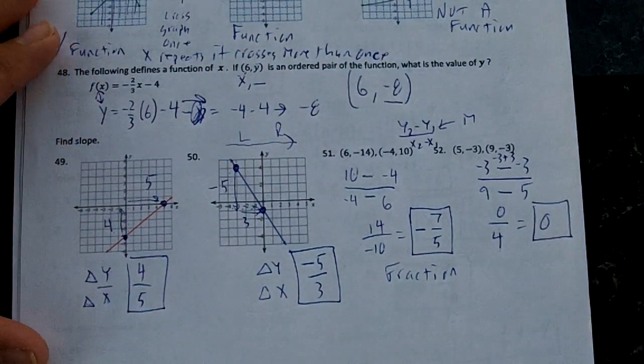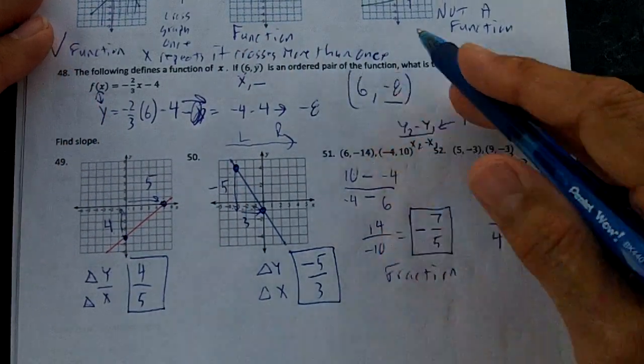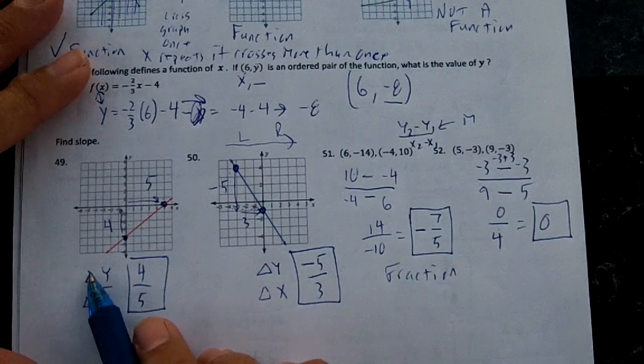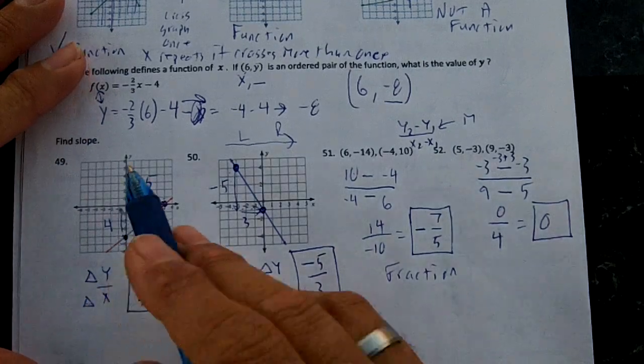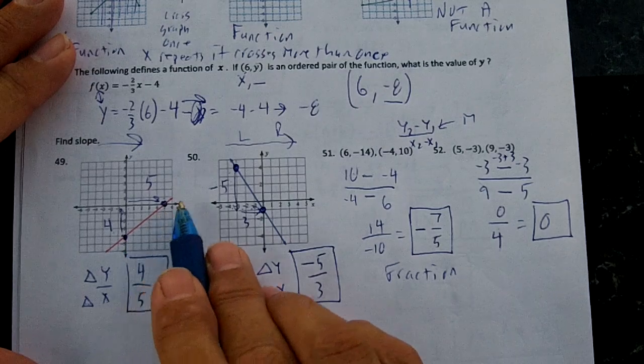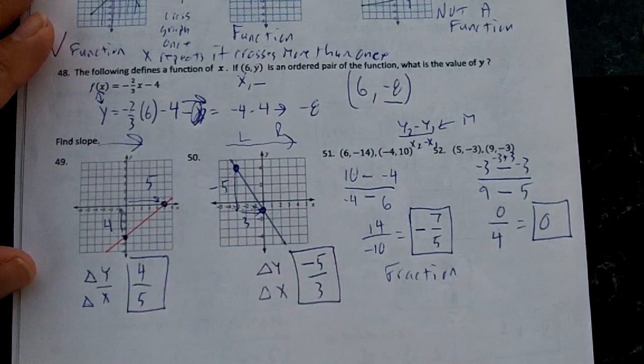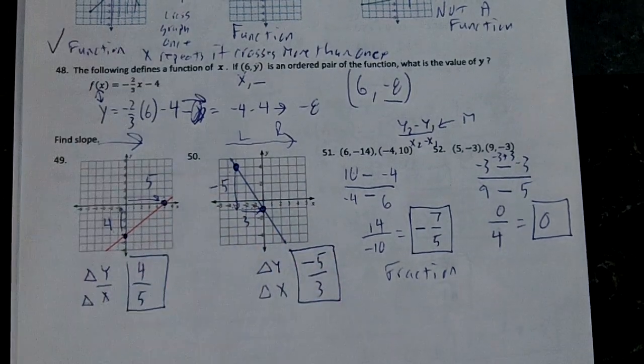If the 0 were on the bottom, it would be a no slope. Any questions on these right here? Remember, you're putting your change in Y over your change in X. Always go left to right when you do this and find your grid points. That tells you how much you go up and over.